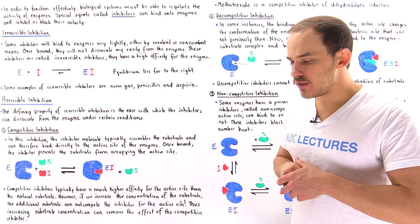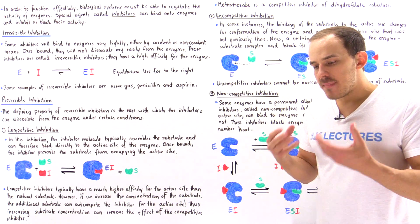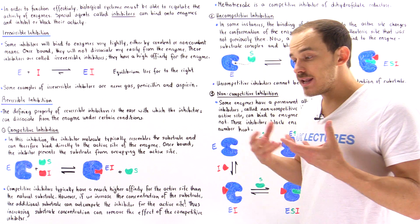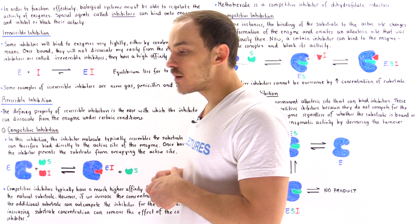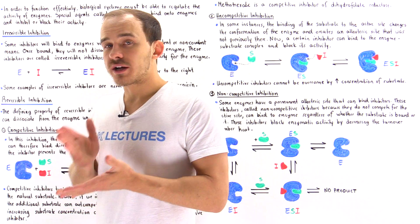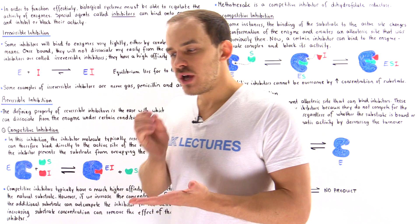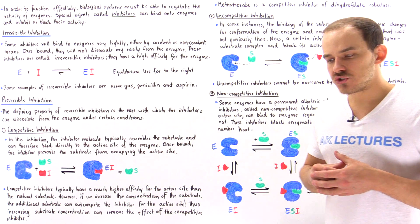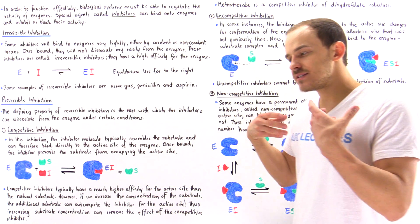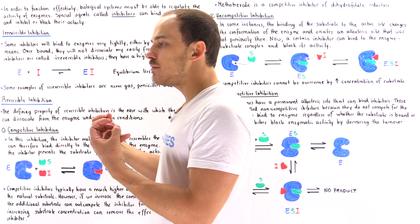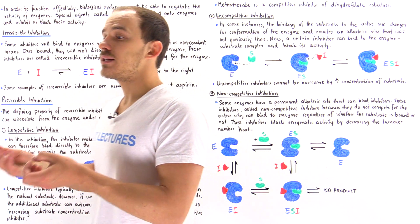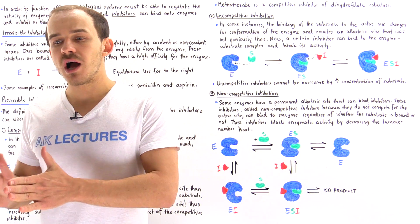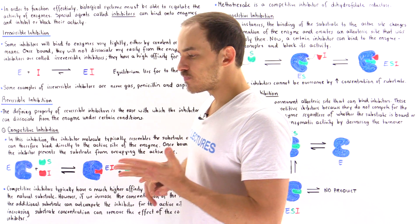As we discussed previously, many of the biological processes that exist in nature, for example in the cells of our body, are catalyzed by enzymes. Enzymes speed up the rates of chemical reactions, and that essentially produces the same amount of product as without the enzyme, but it produces that product at a much higher rate.